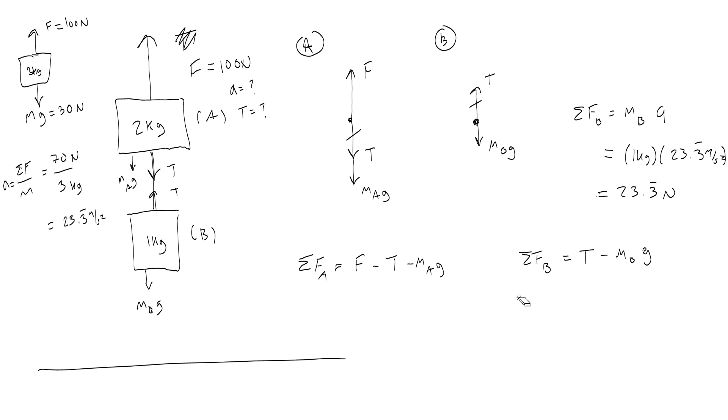And then when I plug that in here, I would get 23. Actually, I'll rearrange to solve for tension first. Then net force on B plus the weight, I would get 23.3 newtons plus, and in this case, the weight would be 1 kilogram times 10, so 10 newtons. So 33.3 newtons, that's the tension. If I wanted to plug that back into here and verify, then I could.